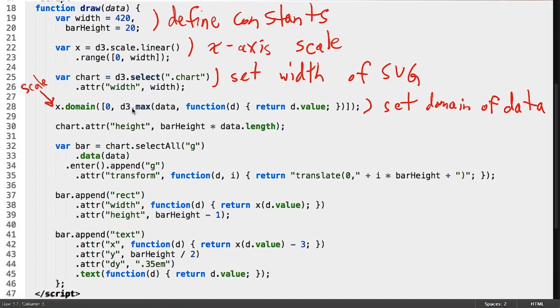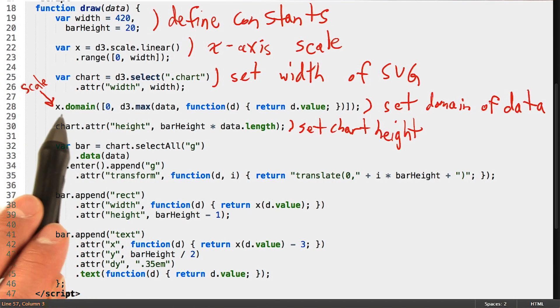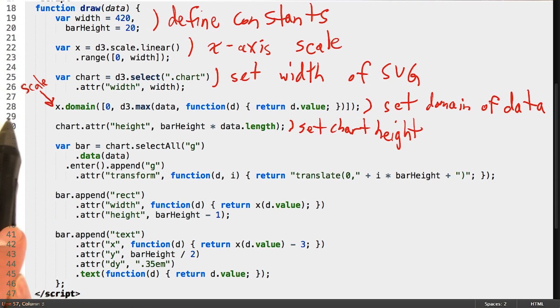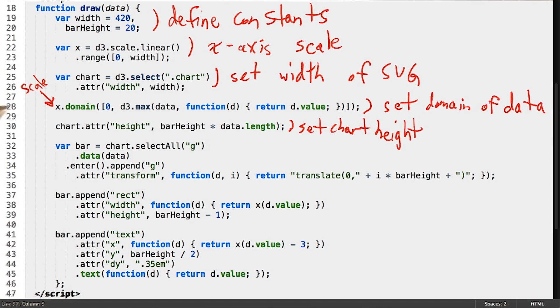Notice also that we don't store the return value of x.domain in any variable. This is because both domain and range mutate the internal state of the scale object, setting some properties on the object itself, rather than returning a value.